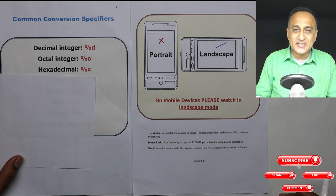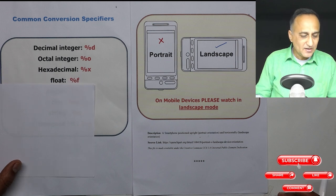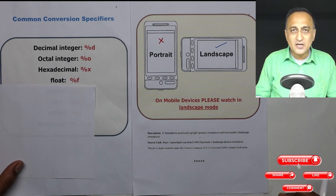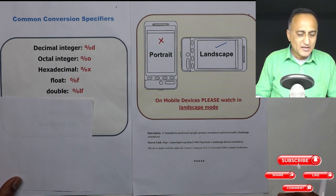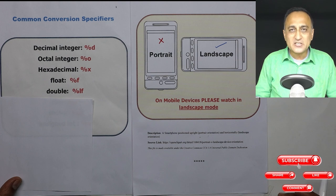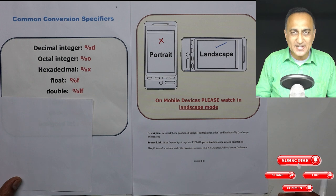Hexadecimal, it is %x. Real number or single precision real number is %f. Double precision real number is %lf. It is not 1f, it is L as in lion, f.